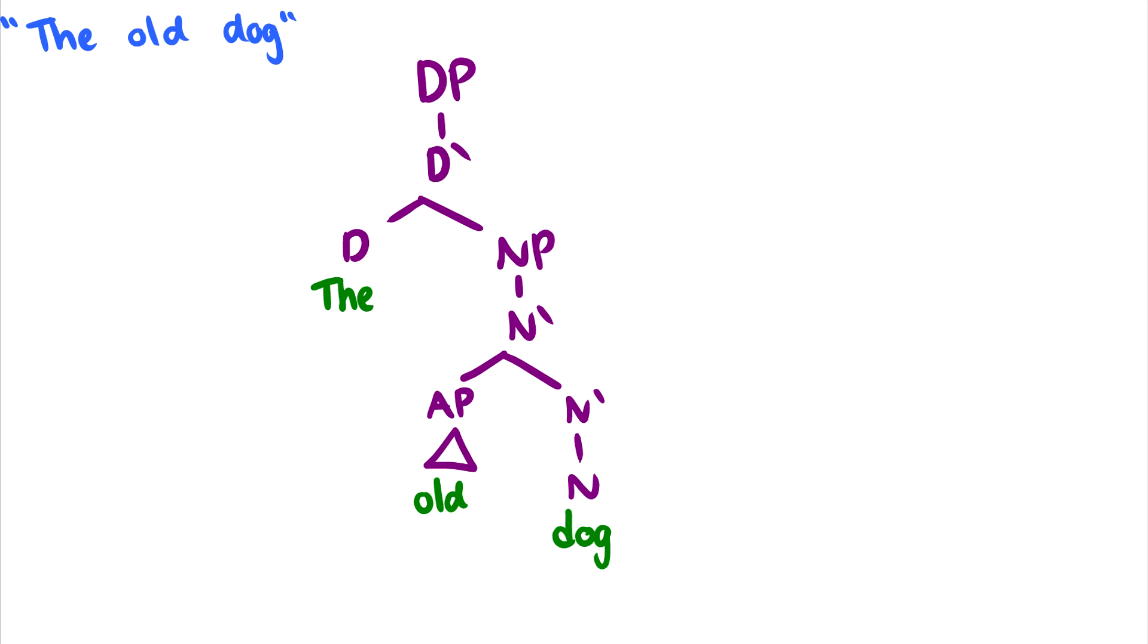Before we talk about that, let's just show you one more example of how this looks. So the old dog, we've done something very similar. And the important thing here to note is that DPs, they have bar levels too. So the is the head of a determiner, and the noun phrase is the complement. So it's the sister of a D, daughter of a D bar.